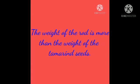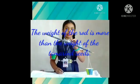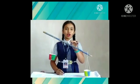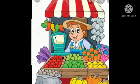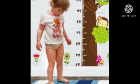The tamarind seeds are very less than the rod. The uses of a balance include vegetable vendors, shopkeepers, hospitals, laboratories, and more. Thank you everyone for watching my video.